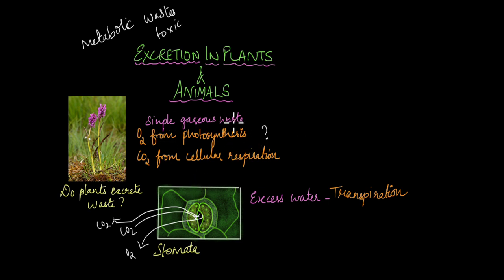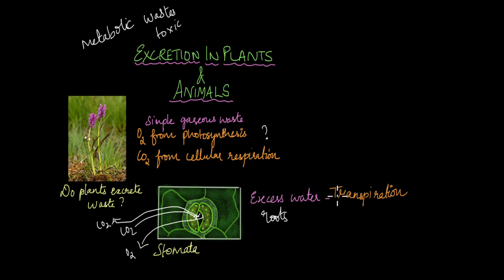Sometimes plants absorb excess water through their roots and this water needs to be excreted out. That is also done with the help of stomata. The loss of water through these stomata pores is known as transpiration. It is a form of evaporation and also takes place with the help of stomata.